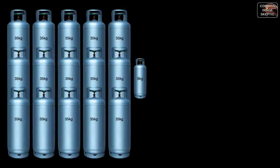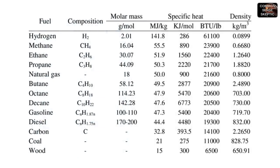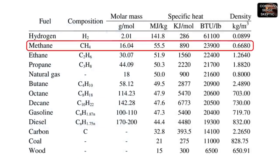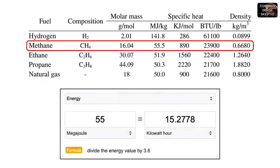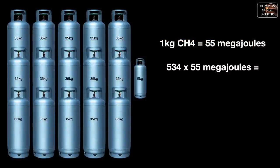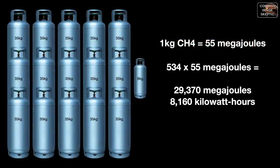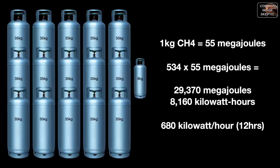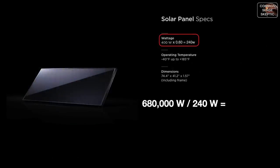Every day the colonists have to produce 534 kilograms of methane, and the specific energy stored in methane is 55 megajoules per kilogram — equating to 15.28 kilowatt-hours. 534 kilograms would therefore be 29,370 megajoules or 8,160 kilowatt-hours. Spread across a 12-hour day, that would be 680 kilowatts per hour.